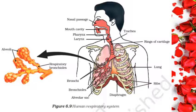In human beings, air is taken into the body through the nostrils. This air passing through the nostrils is filtered by fine hair that line the passages. The passages are also lined with mucus which helps in the process. From there, the air passes through the throat and into the lungs. Rings of cartilage are present in the throat to ensure that the air passage does not collapse.